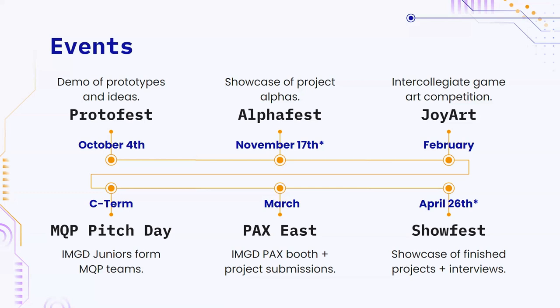The next big event is MQP Pitch Day. This is another one you should go to regardless of requirements. If you're a junior, you will have to go to MQP Pitch Day. Essentially, it's the day where IMGD students have the opportunity to pitch their own MQPs and join MQP teams. You need to get greenlit as an IMGD MQP, which means getting faculty advisors to sign off on it and making an argument for why this should run. If you're not a junior, you should still go — you want to see which projects are running this year because you may be interested in ISPing for certain things.